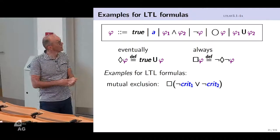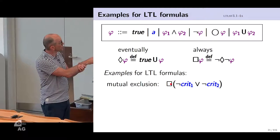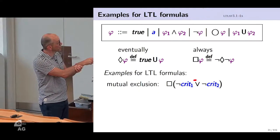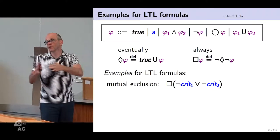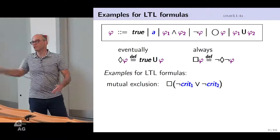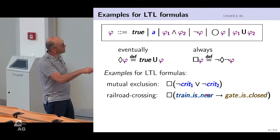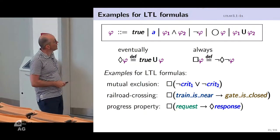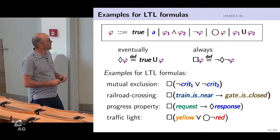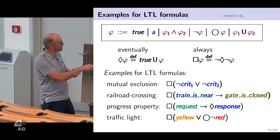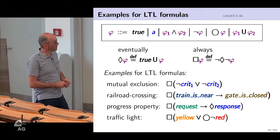Examples: In mutual exclusion, it must always hold that either process one or process two is not in the critical section. It's always the case that if a train is near, the gate is closed. It's always the case that if a request is made, at some point in the future it will be responded to. Also: always, either the traffic light is yellow or the next position is not red.